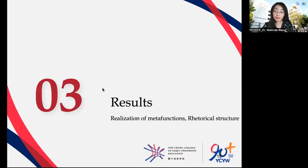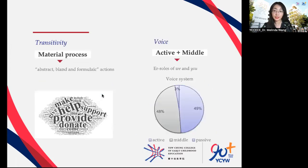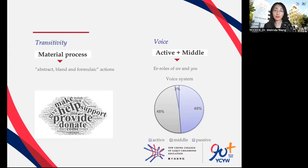Now let's look at the findings. First, in terms of ideational function realization, the transitivity analysis showed a clear preference for the material process on both news and charity project pages, as the figure illustrates. From the word cloud, we know that the top five most frequently used verbs in the material process are: help, provide, donate, support, and meet — describing giving as an abstract, broad, and familiar action.